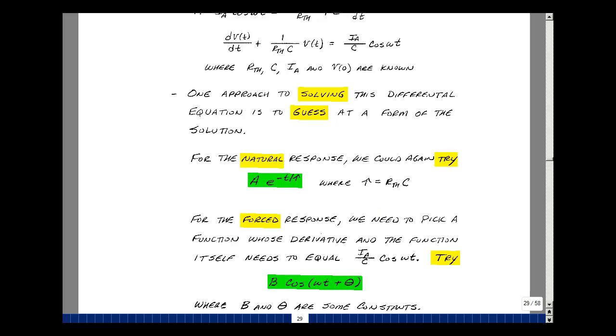For this forced response, we could pick a function whose derivative and function itself needs to equal the I sub A over C times the cosine of omega T. When you differentiate a cosine function, you get a sine function. So they're related by an angle. So you can maybe put a constant here, theta, and then the amplitude usually changes. So our constants here would be B and theta.